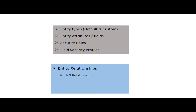Now if we go to entity relationships — just as I mentioned, Dynamics CRM is actually a collection of entities. These entities are, for some purpose, dependent on each other. There can be more than two entities that are interdependent on one another, and for that purpose we use entity relationship terminologies. For entity relationships there are three types: the first one is one-to-N relationship, the next one is N-to-one relationship, and the last one is N-to-N relationship, where N means more than one.